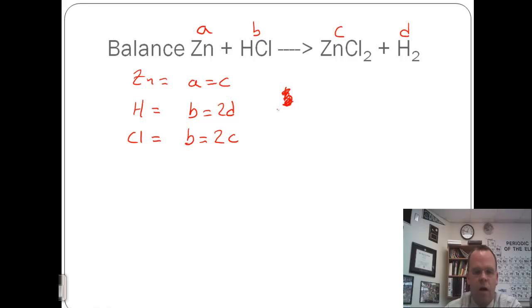In this case, our simplest will probably be A, so I'm going to make A equal to 1. If A is equal to 1, C is equal to 1. B is therefore equal to 2. And if B is equal to 2, D must be equal to 1.